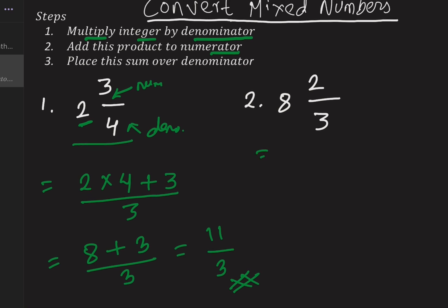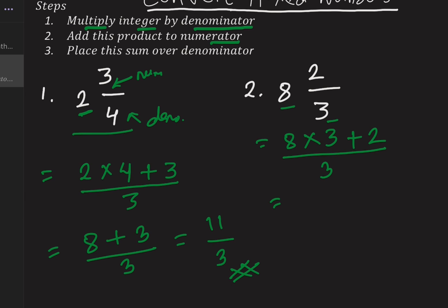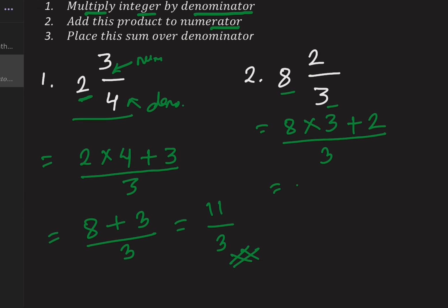Again, similarly working with the other fraction, 8 2/3. Again using the same step. Step 1 is 8 times 3 plus 2 numerator divided by denominator. That is 8 times 3 is 24 plus 2 divided by 3 equals 26 divided by 3.